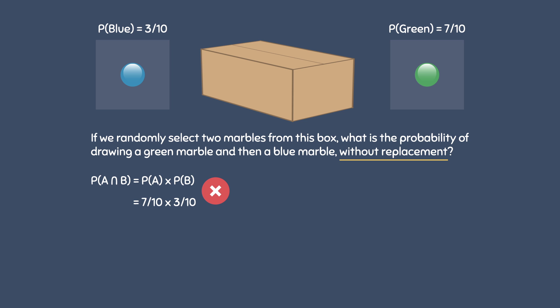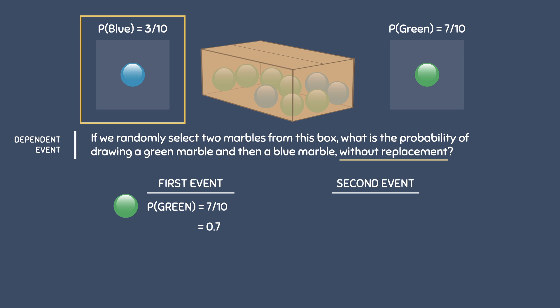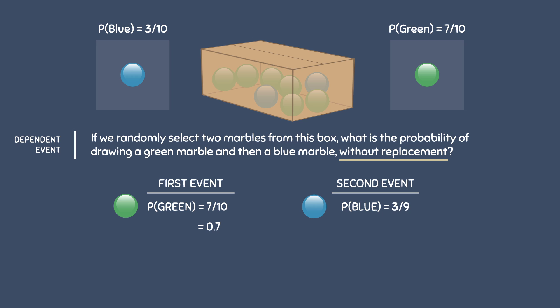This means that the probability will change after every draw, making this a dependent event where the probability of one event affects the probability of another. For the first event, there are 10 marbles in the box, so the probability of drawing 1 green marble is 7 over 10, or 0.7. For the second event, the probability of drawing a blue marble is not 3 over 10. Since there are 9 marbles left in the box with 3 blue marbles remaining, the probability of drawing a blue marble is now 3 over 9, or 0.33. The probability of drawing a blue marble has changed — at first it had a value of 0.3, but now it has a value of 0.33.